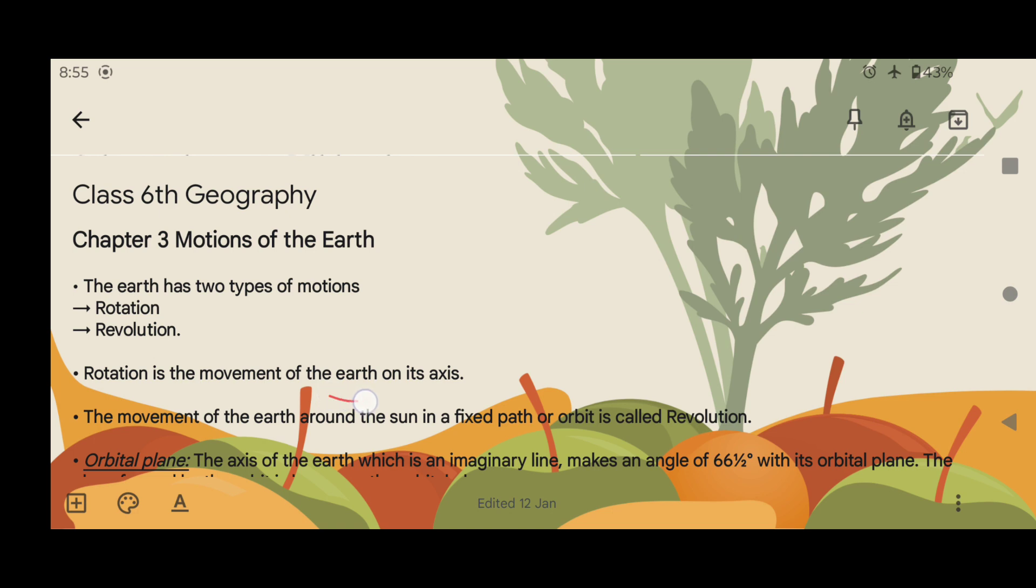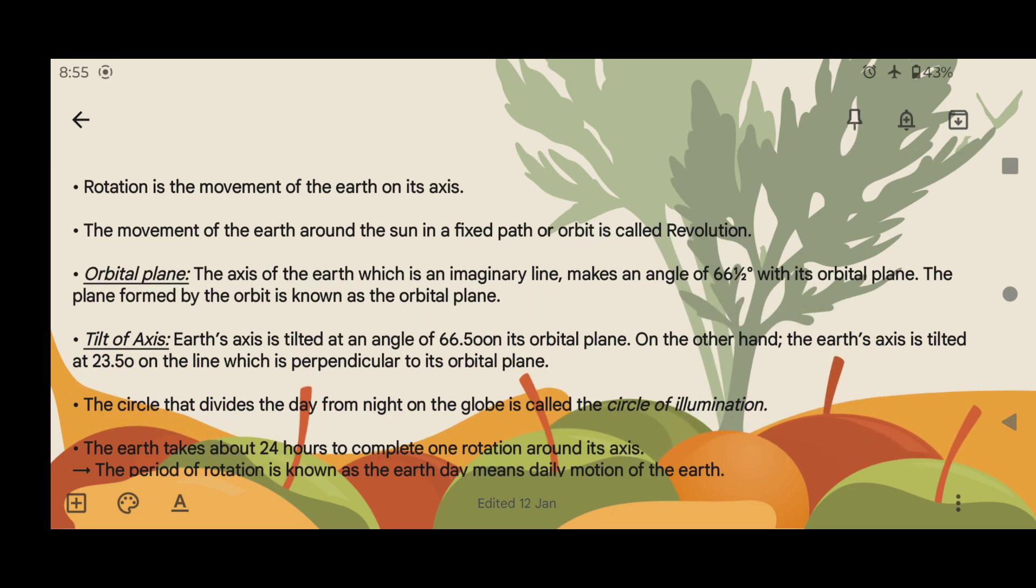Rotation is the movement of Earth on its axis. The movement of the Earth around the Sun in a fixed path or orbit is called revolution.